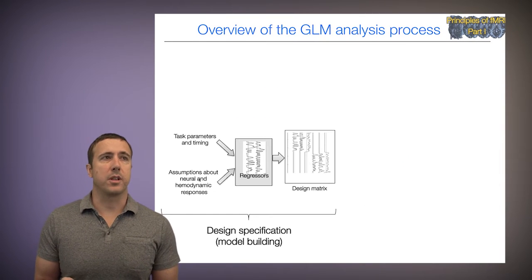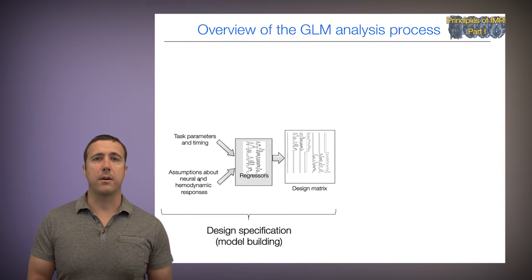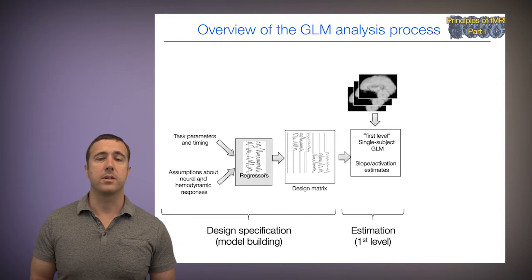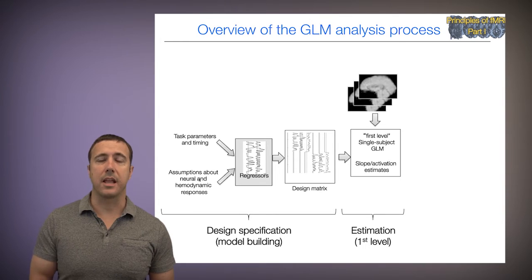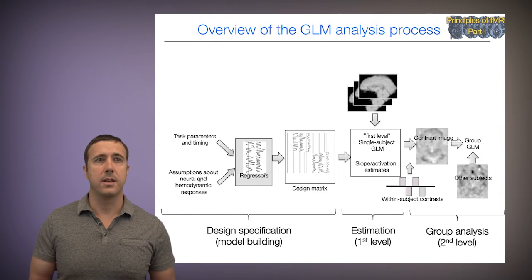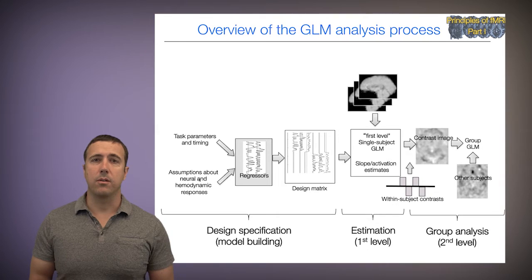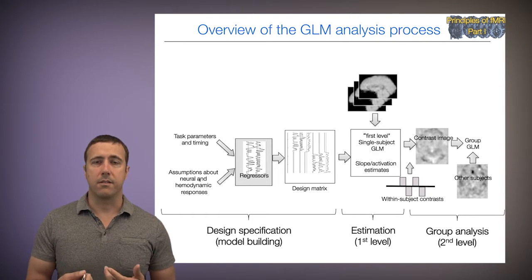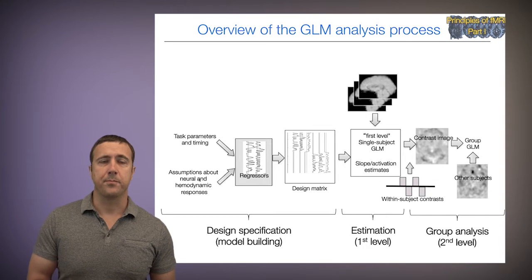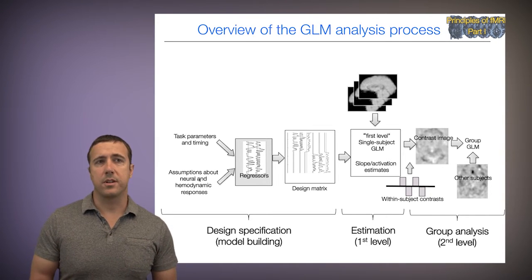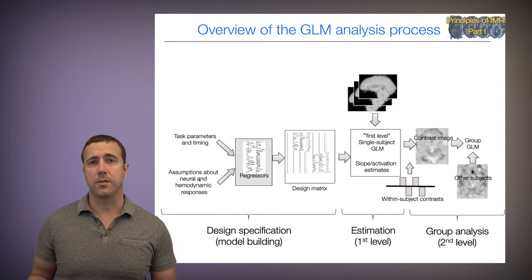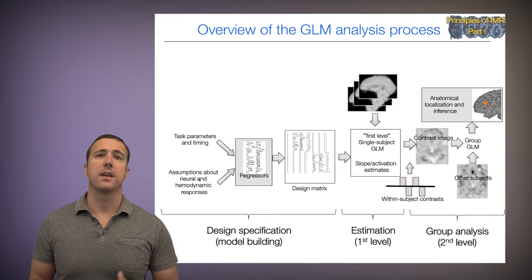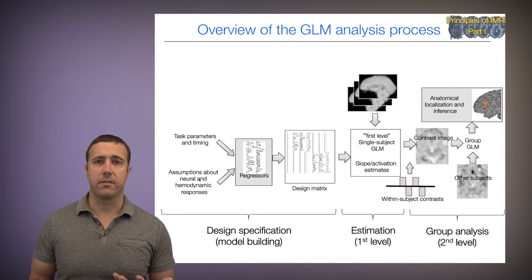Here's an overview of the GLM analysis process. We talked before about design specification or model building, estimation of the design at the first level for every voxel for a subject, and defining contrasts, which are effects of interest that you care about. Those contrast images for each person are combined with contrast images from other subjects into a group analysis. That's what allows us to make inferences about which areas are activated in the population.